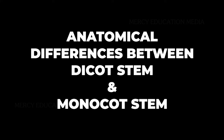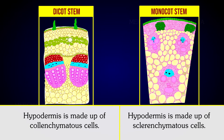We shall learn about the anatomical differences between the dicot stem and the monocot stem. In the dicot stem, the hypodermis is made up of collenchymatous cells. In a monocot stem, the hypodermis is made up of collenchymatous cells.